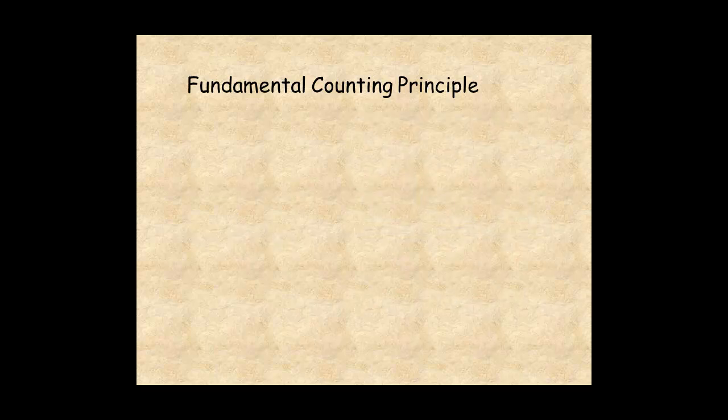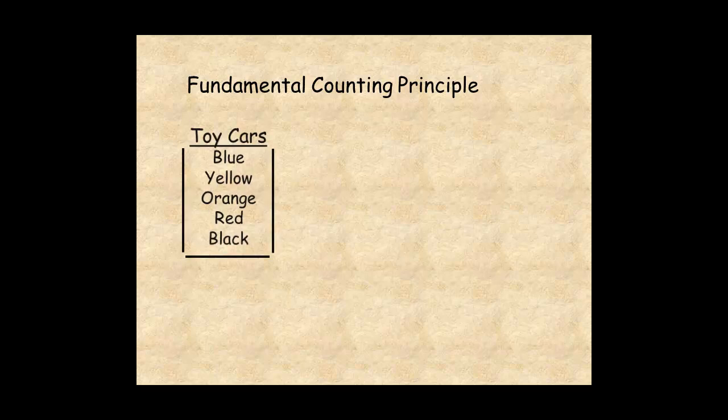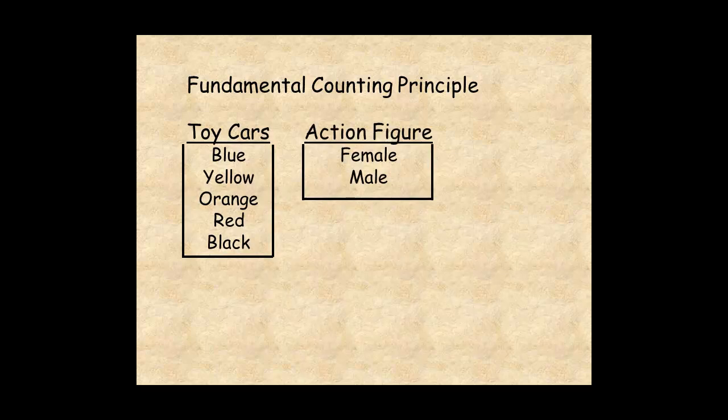For one more example, a toy shop has model cars and action figures. There are five different car colors and two types of action figures, male and female. This gives a total of five times two equals 10 different possible outcomes. The probability of randomly selecting an orange car and a female action figure is 10%.